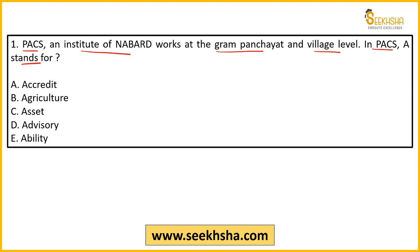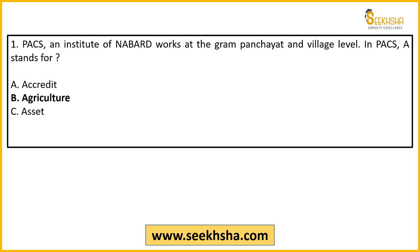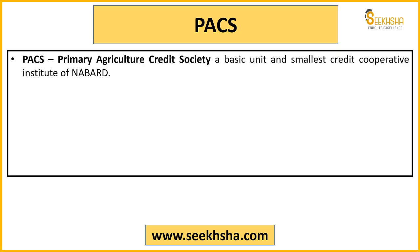Simple question hai. Agar NABARD ke baare mein padha hua hai, toh PACS ki full form aa jayegi. A stands for agriculture. PACS ki full form hoti hai: Primary Agriculture Credit Society. Yeh full form P-A-C-S aapko yaad honi chahiye — woh full form puri bhi poochh sakta tha, 4 ya 5 options de deta.